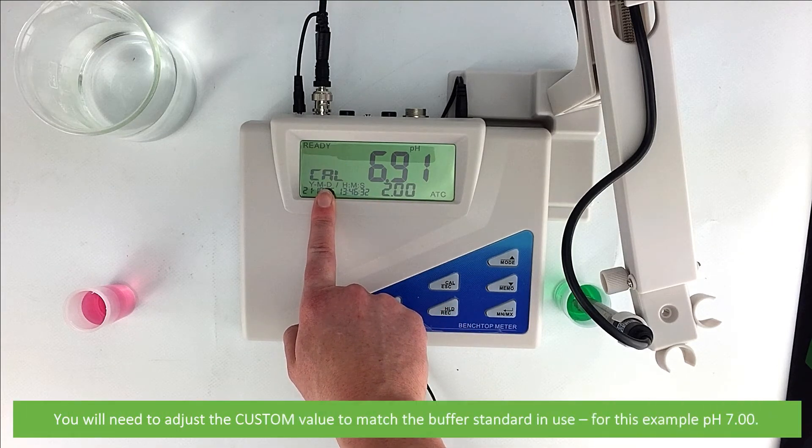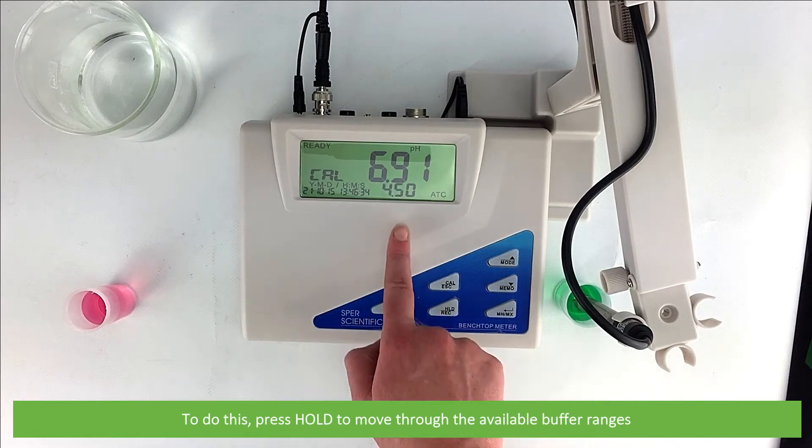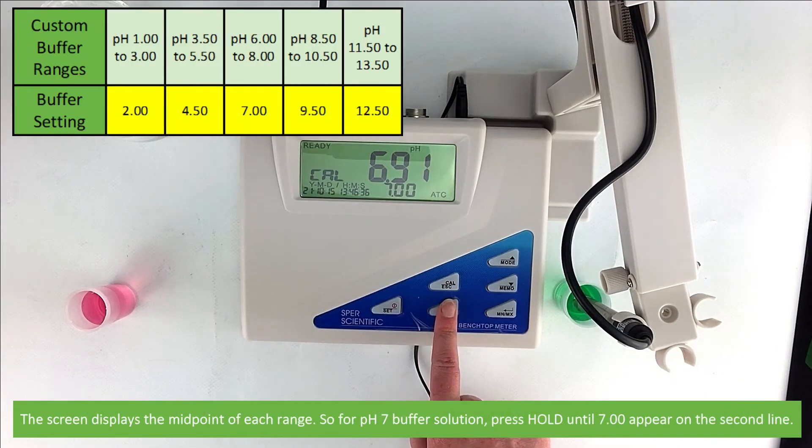You will need to adjust the custom value to match the buffer standard in use, for this example pH 7. To do this, press the hold key to move through the available buffer ranges. The screen will display the midpoint of each range.